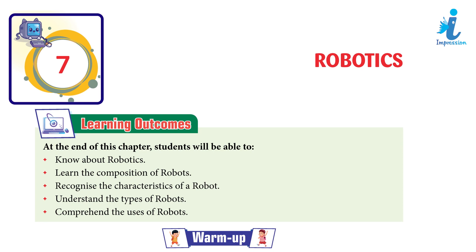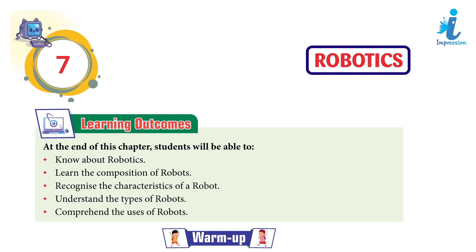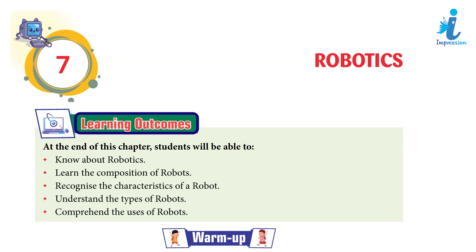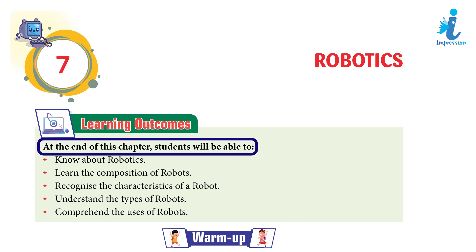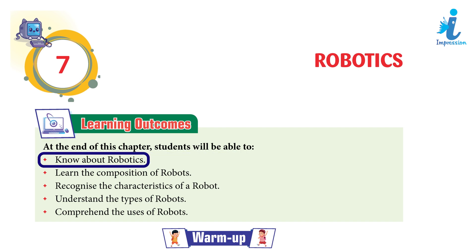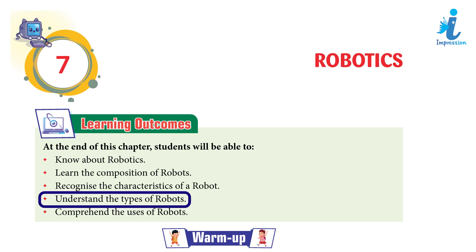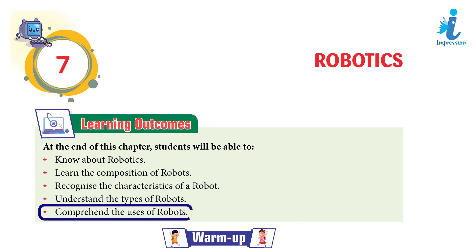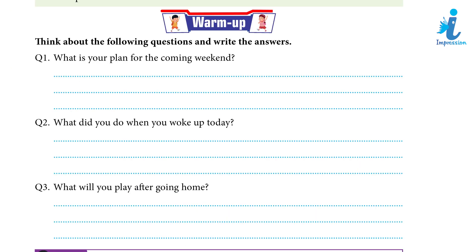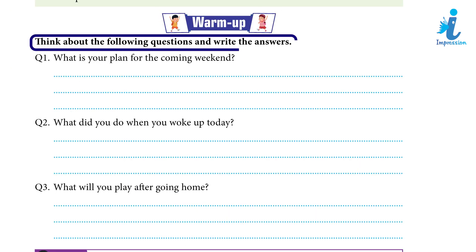Chapter 7: Robotics. Learning Outcomes: At the end of this chapter, students will be able to know about robotics, learn the composition of robots, recognize the characteristics of a robot, understand the types of robots, and comprehend the uses of robots. Warm up: Think about the following questions and write the answers.